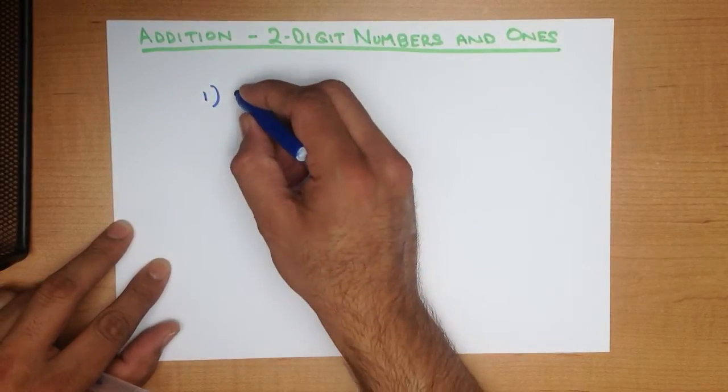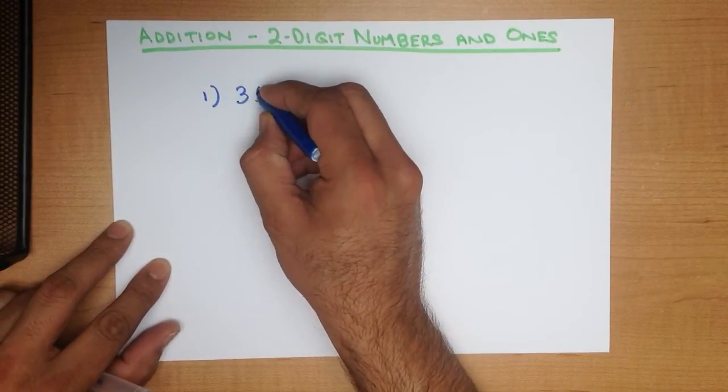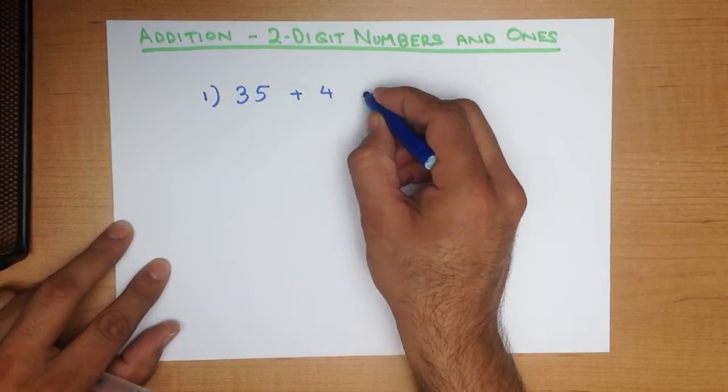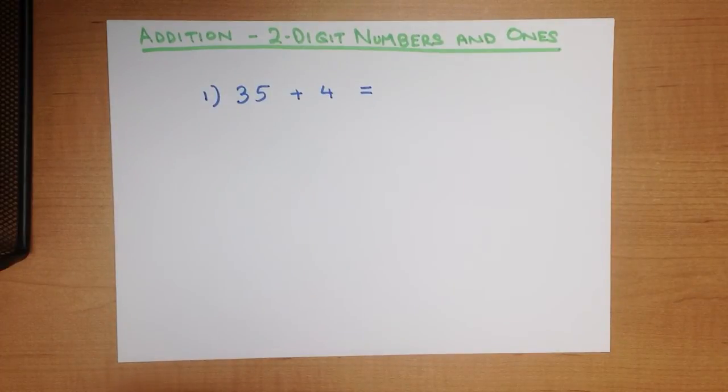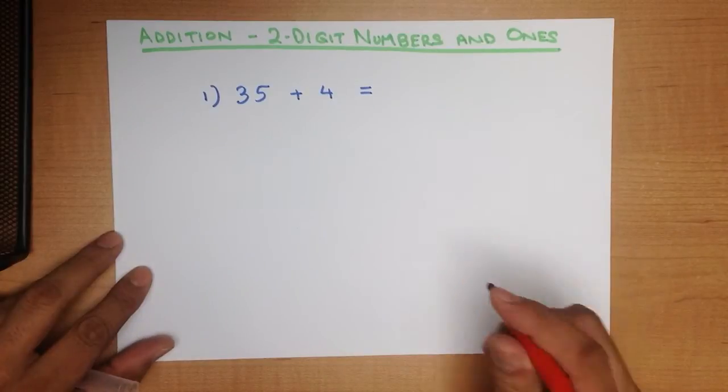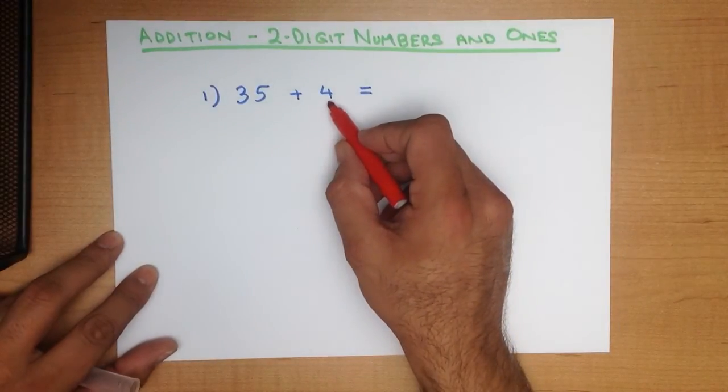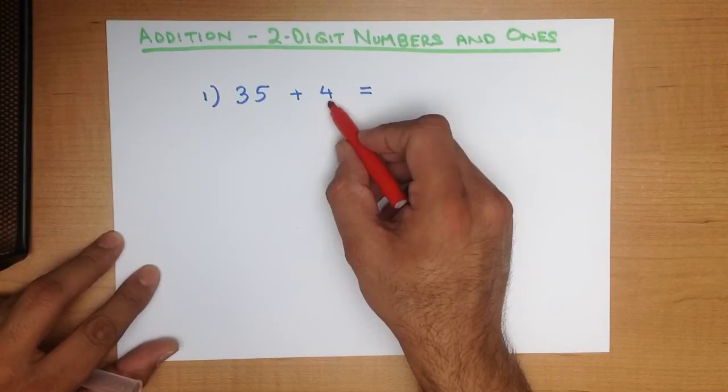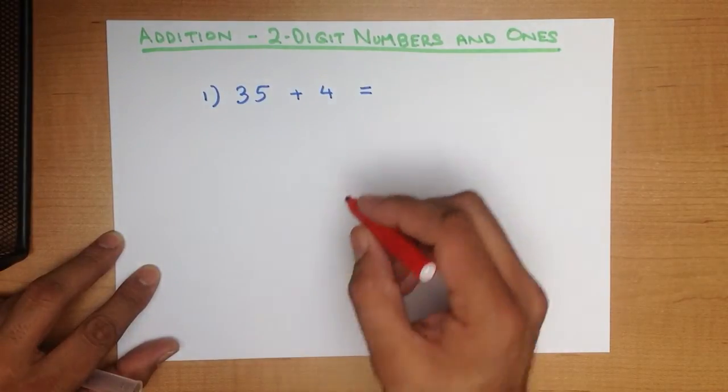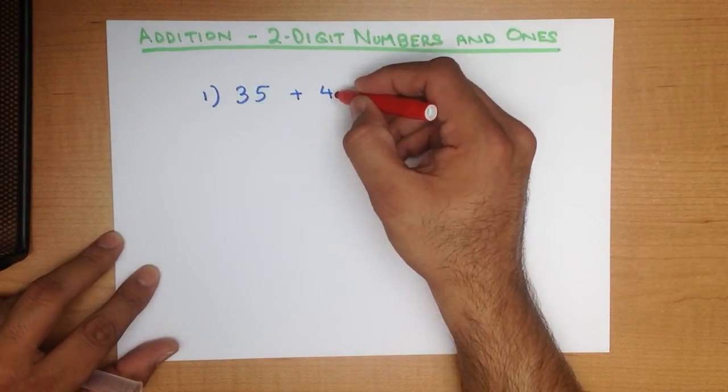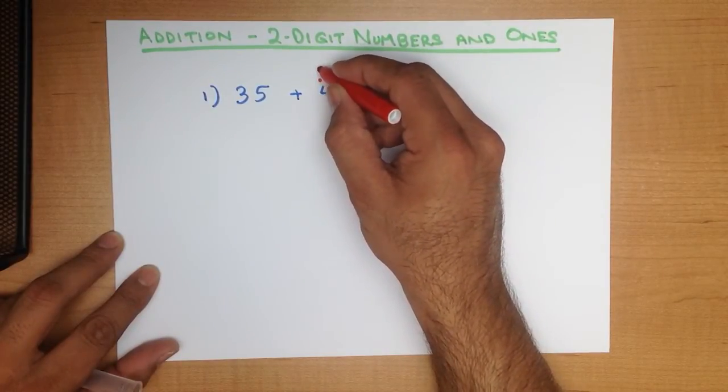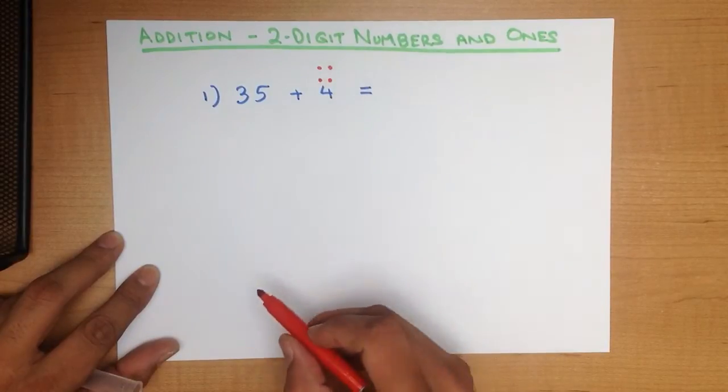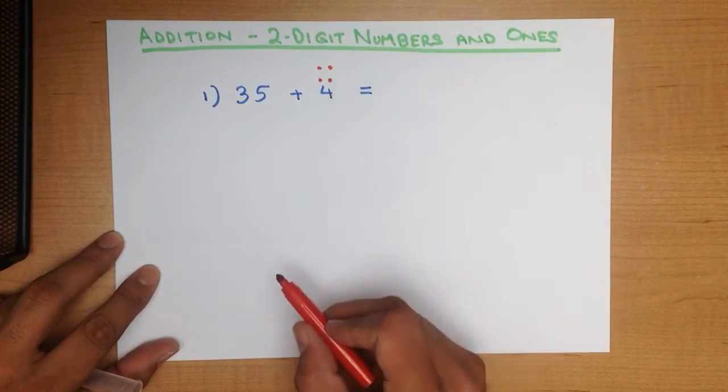What is 35 plus 4? Now to do this using the dot method, we simply place the dots above the smaller number, the ones number, the single digit number. Here we have four. So let's put four dots above it. One, two, three, four. The number four with four dots.